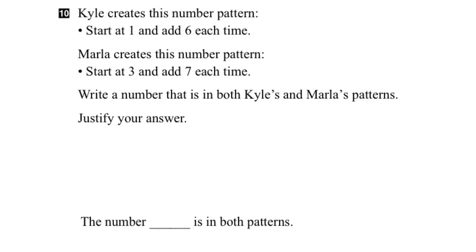Let's start with Kyle. We know that the first number in his pattern is 1, and then he's going to add 6 each time. So if we added 6 to 1, we'd get 7. Add 6 to 7, we'd get 13. If we added another 6, we'd get 19. And we keep going for a bit here. Add another 6 would be 25. Add another 6, we'd get 31. Add another 6, we'd get 37, and so on.